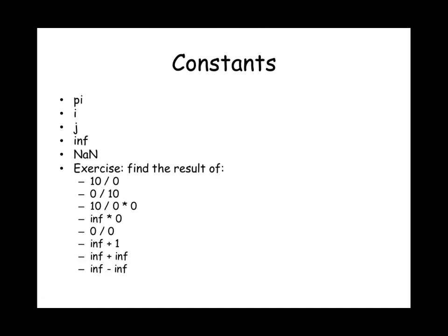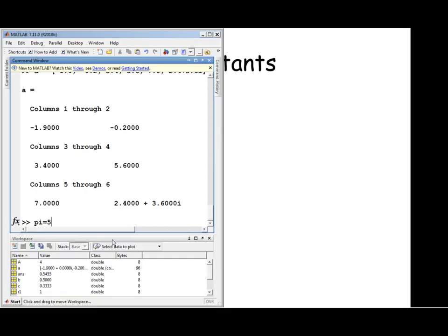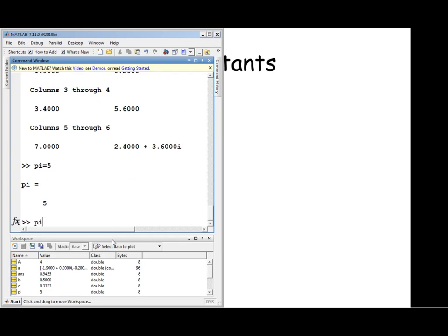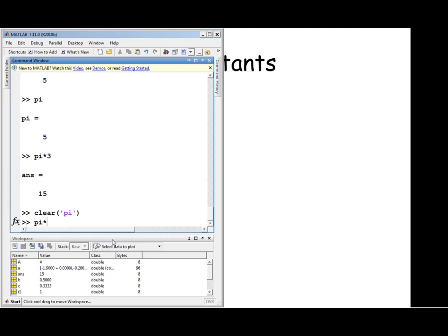There are several constants in MATLAB. Pi is 3.14159... I and J represent the complex number which is the square root of minus 1. Inf represents an infinitely large number. NaN stands for not a number. You can use variable names that match these constants, but once you define a variable named pi equals 5, whenever you reference pi, that variable's value is used instead. You must clear the variable to regain access to the mathematical constant.